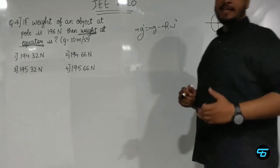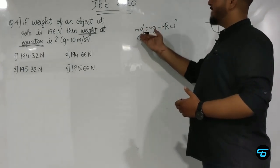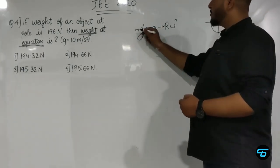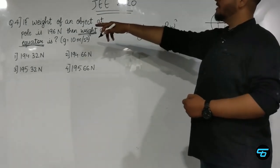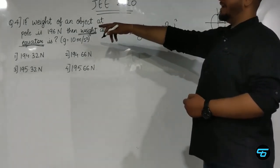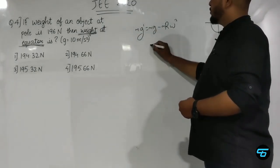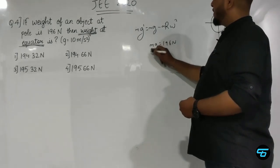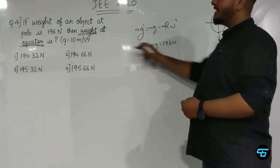Now I need to find mg dash, which is weight at equator. Students, first we need to find the mass. In the question, it's already given that weight at pole is 196 Newton. So from this I can find m. Since g value is 10, mass m will become 19.6 kg.